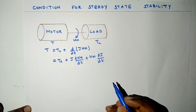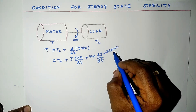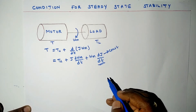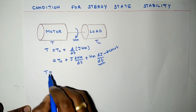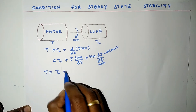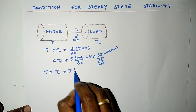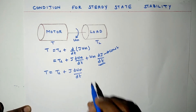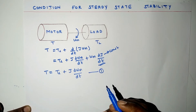For a motor-load system, if J is considered to be constant, then differentiation of constant with respect to time becomes zero. So this can be rewritten as T = TL + J * (d omega_m / dt). We name this as Equation 1.